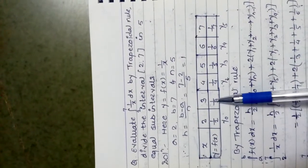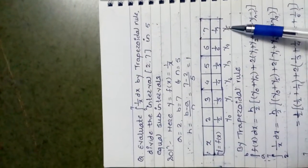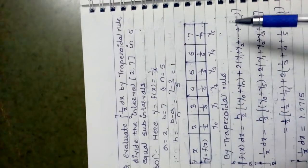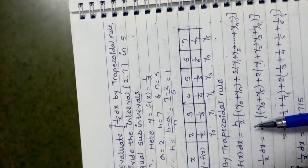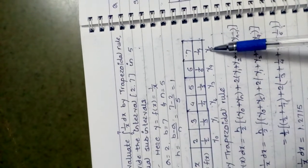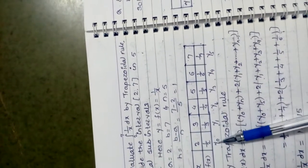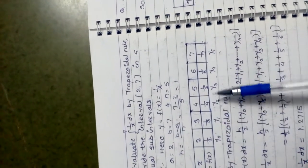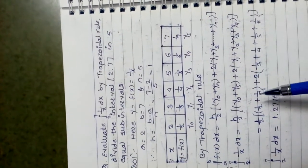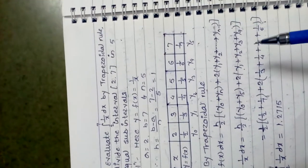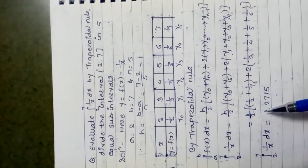y0 is the initial value and y5 is the last value yn. Applying the trapezoidal rule, the integral from 2 to 7 of (1/x) dx = h/2 × [y0 + yn + 2(y1 + y2 + y3 + y4)]. Substituting: h = 1, y0 = 1/2, y5 = 1/7, y1 = 1/3, y2 = 1/4, y3 = 1/5, y4 = 1/6. After calculating all these values, we get the final answer: approximately 1.27.